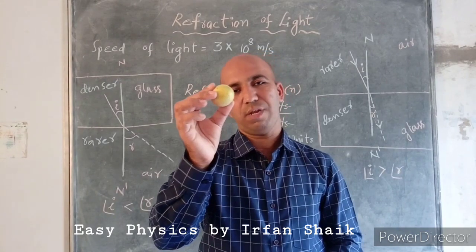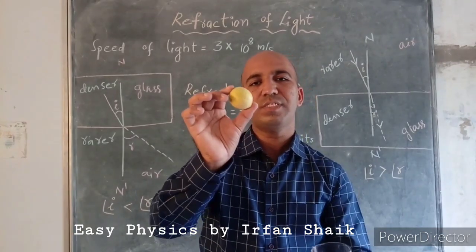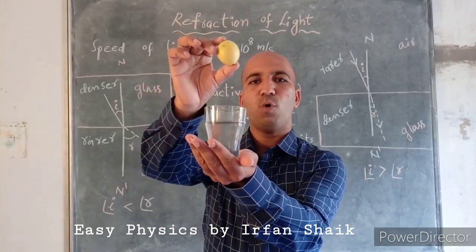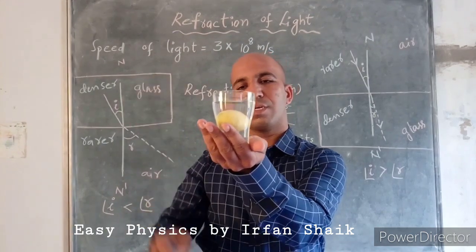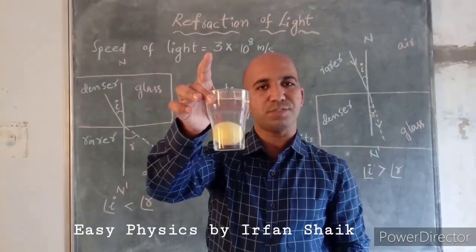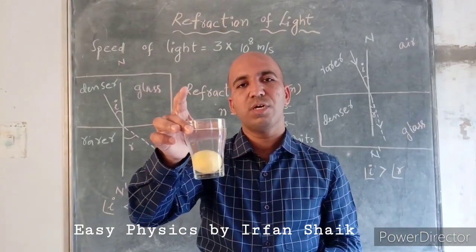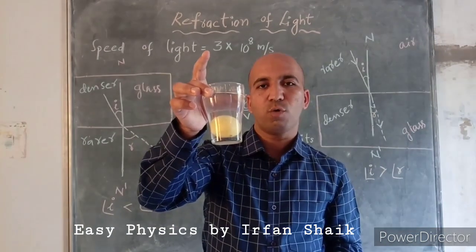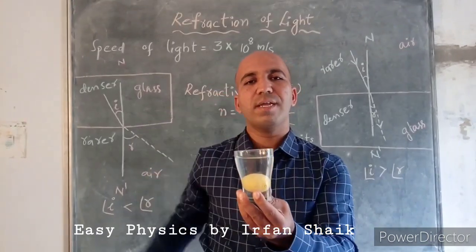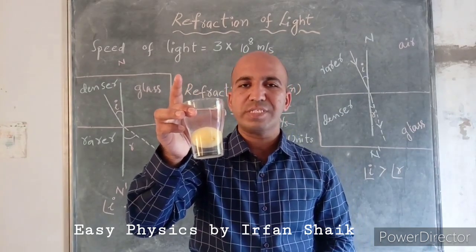Here I have a lemon. Observe the size of the lemon. Now what happens when this lemon is placed inside the water? I am going to put this lemon into the glass of water. Observe the size of the lemon now — it is looking bigger than its original size. Why is this happening? This is also because of refraction. In this class we are going to discuss why objects look bigger than their original size and why light rays bend.